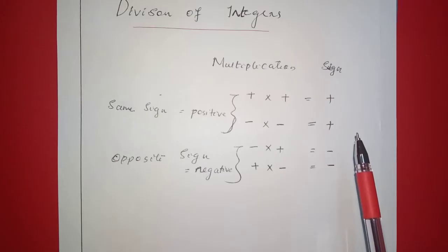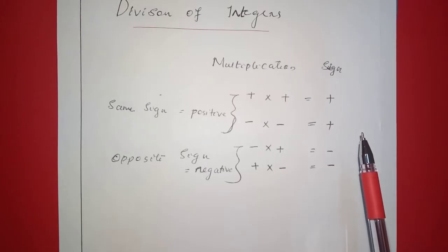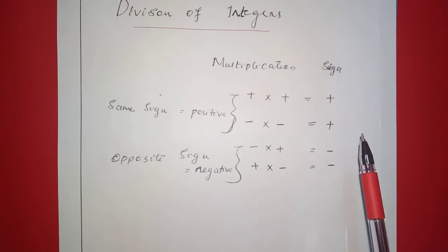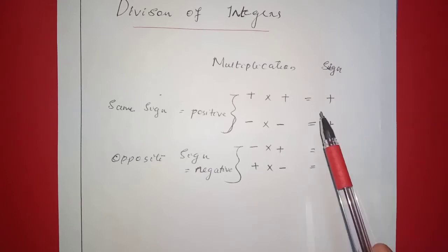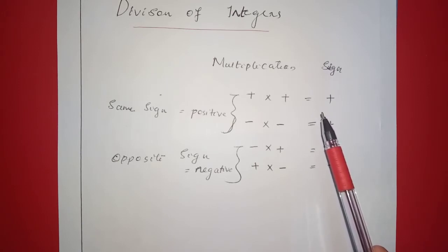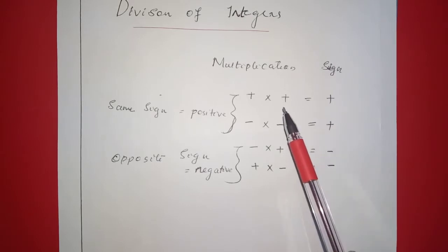Here we are going to multiply the integers, and look at subtraction and multiplication. Next is the division of integers. We divide the integers — we multiply the integers and divide the integers. So, how do we multiply the integers?